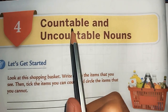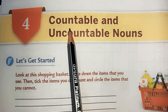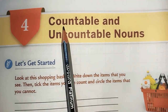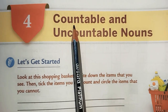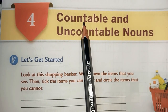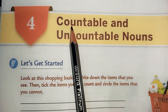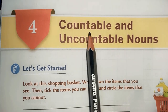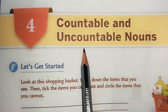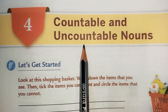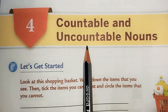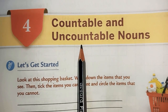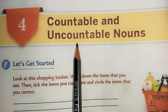Now let us study countable nouns. As the name suggests, 'count' — something which can be counted. Anything that can be counted is called a countable noun. And its opposite is uncountable — something which we cannot count. Things that we cannot count are called uncountable nouns.